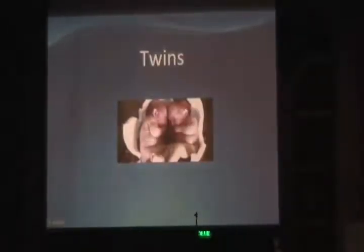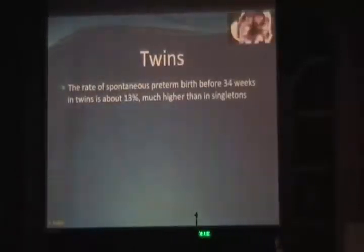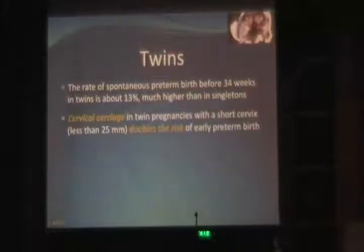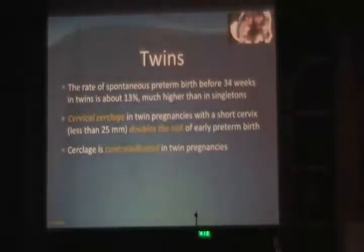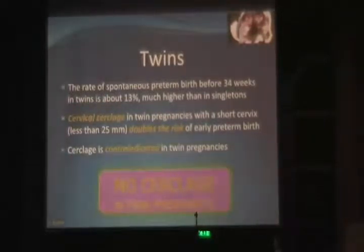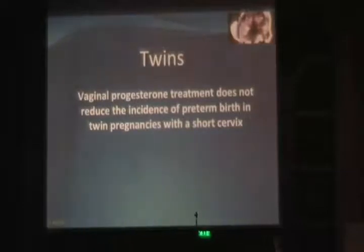In twin pregnancies, the rate of spontaneous preterm birth before 34 weeks is about 32%, much higher than in singletons. Several randomized studies have shown that cervical cerclage in twins with short cervix doubles the risk of early preterm birth — so cerclage is detrimental and currently contraindicated in twin pregnancies. On the other hand, progesterone for short cervix in twin pregnancies is not harmful like cerclage, but it does not seem to help either.